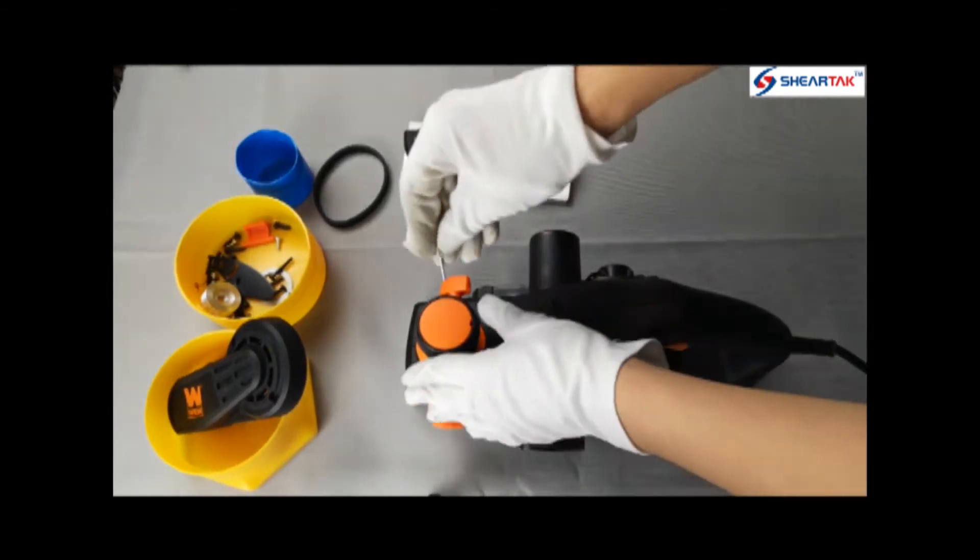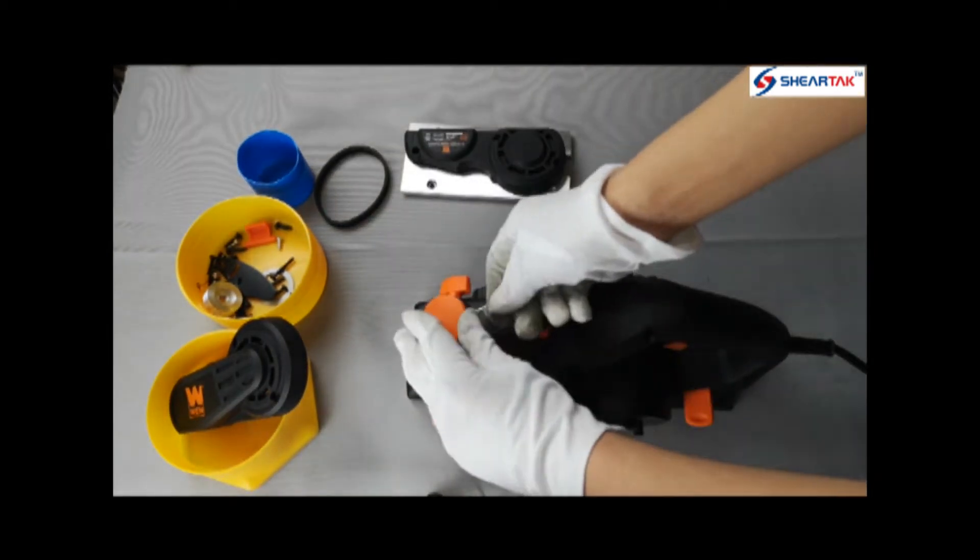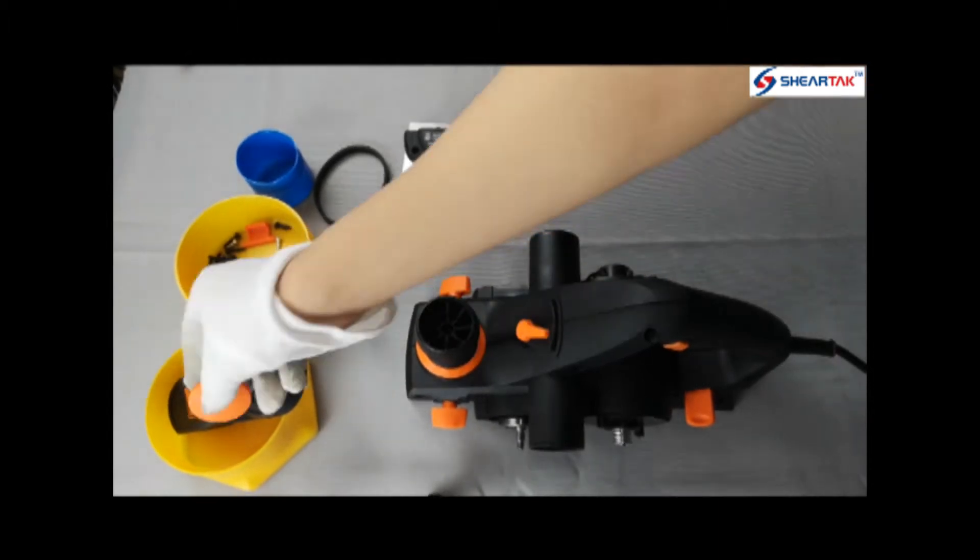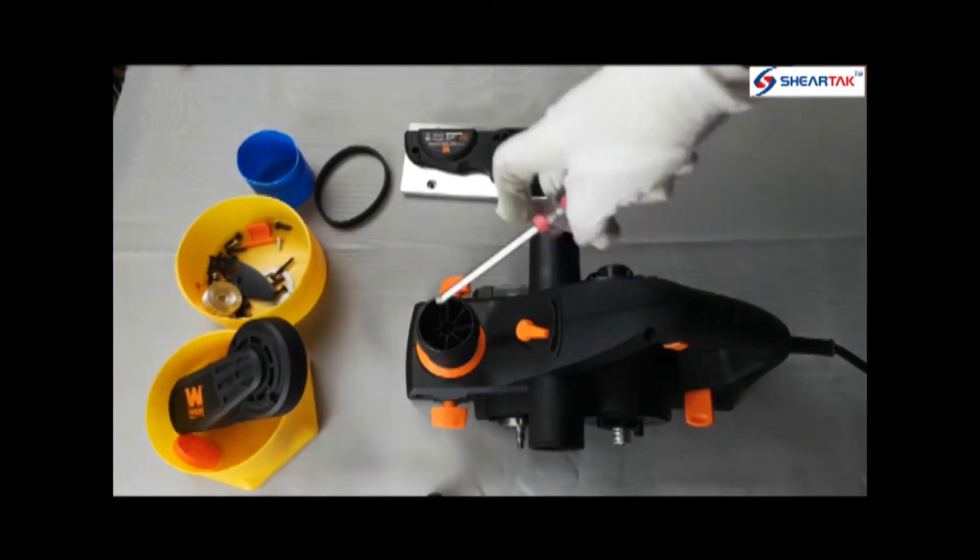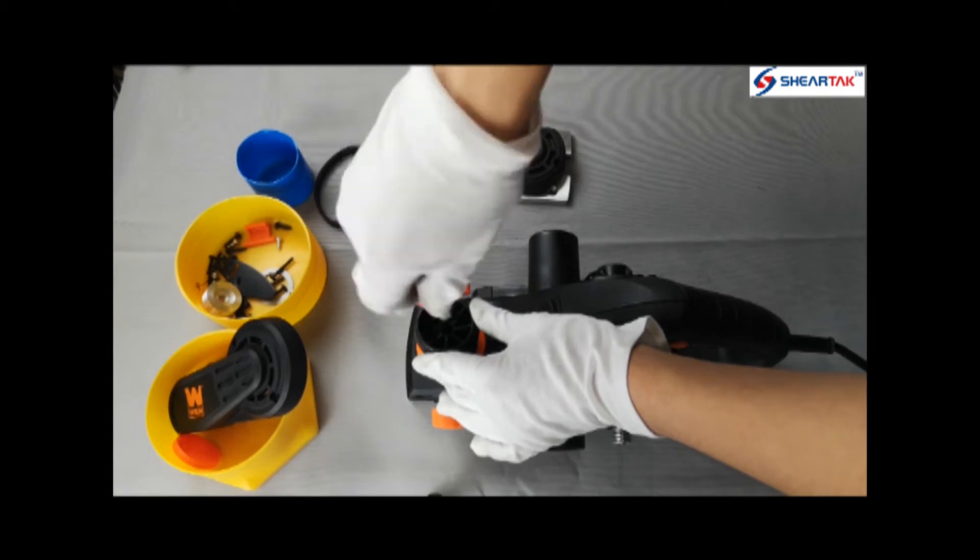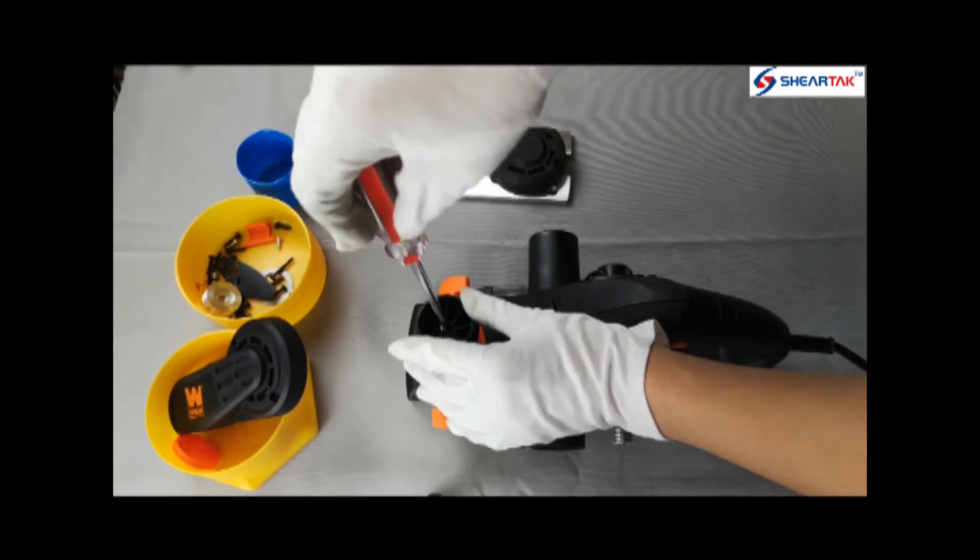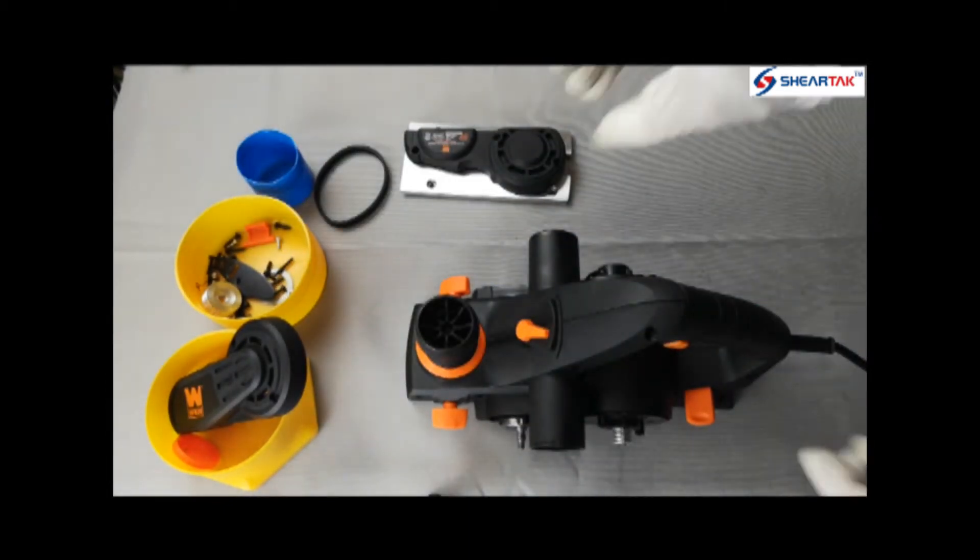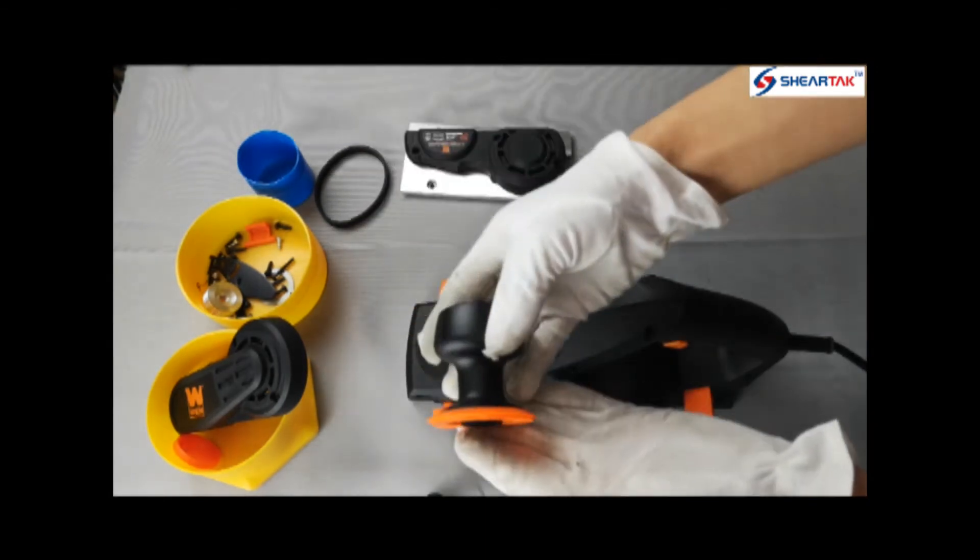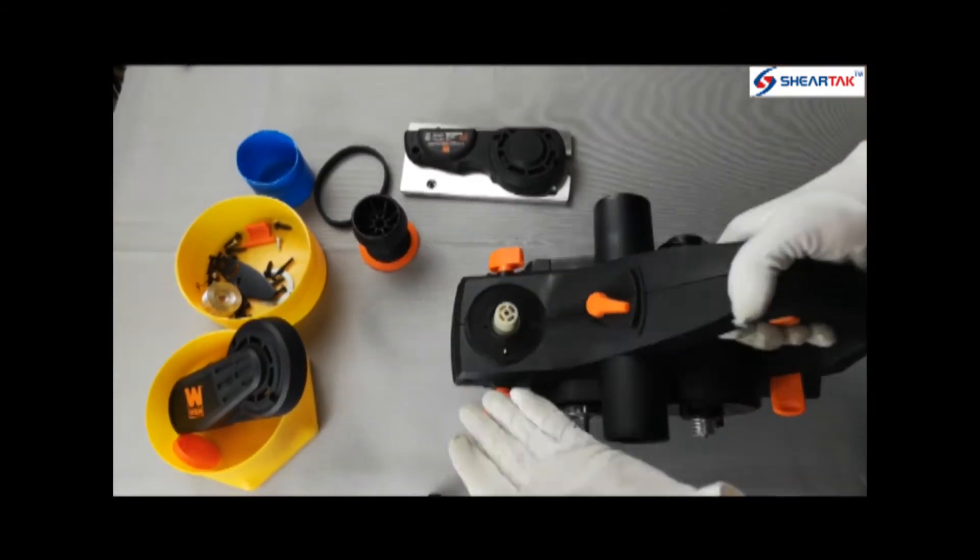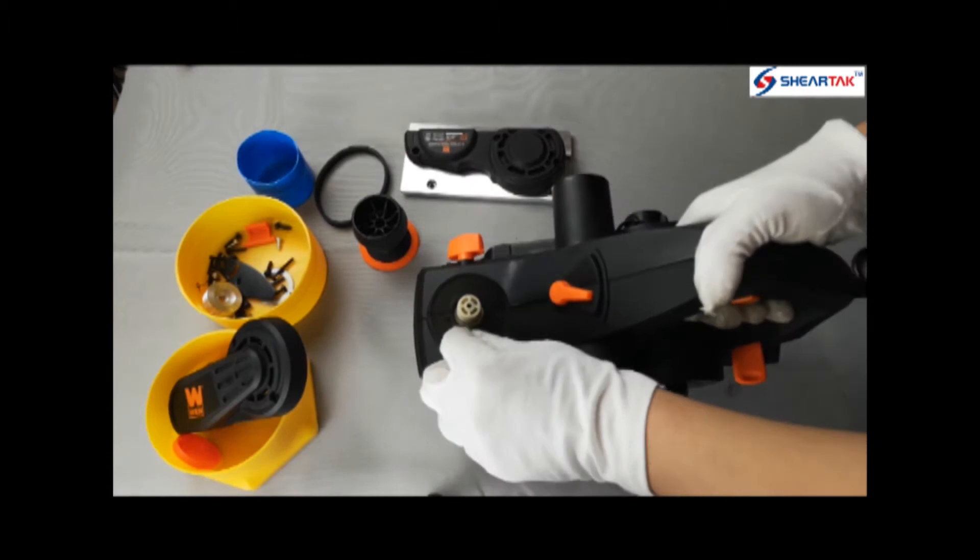Remove the knob cover with a razor or any thin object. Remove the screw and adjust knob. Take out the ball and the front shoe spring.